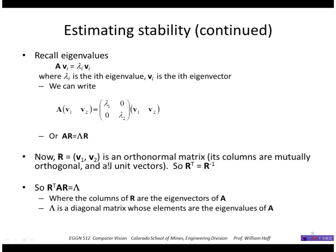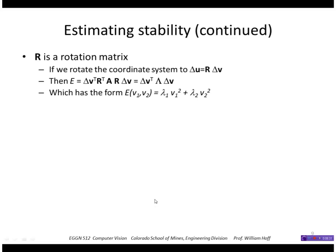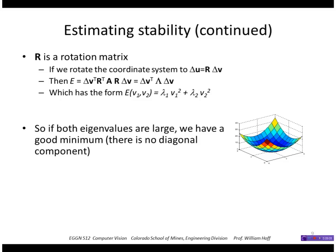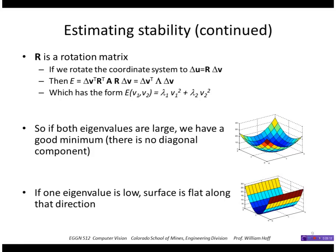The columns of R, remember, are the eigenvectors, and the diagonals of lambda are the eigenvalues. So we can think of R as a rotation matrix. If we rotate our displacements by that quantity R, then the error surface just becomes the delta v's, where delta v is our rotated system, times this lambda, this diagonal matrix lambda. So this E has the form lambda 1 v squared plus lambda 2 v 2 squared. So it has no off-diagonal elements in this rotated system. If I simply look at these values, lambda 1 and lambda 2, if those are large, then I've got a good minimum. There's no diagonal component. But if one of the eigenvalues is low, then the surface will be flat in that direction corresponding to that eigenvector direction.